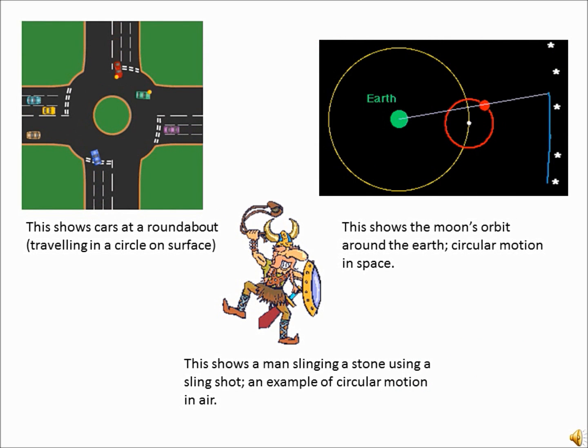As you can see, circular motion can occur in three different situations. First, on a surface like the cars in the first image. Second, in the air, like the Viking slinger. Or in space, like the moon orbiting the Earth.